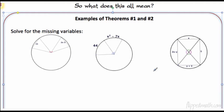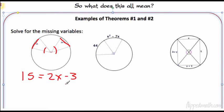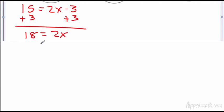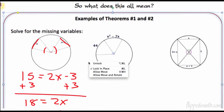What do these theorems mean for solving circle problems? In the first example, we have congruent central angles. Congruent central angles have congruent arcs, and congruent arcs have congruent chords. So 15 equals 2x minus 3. Add 3 to both sides: 18 equals 2x. Divide by 2: x equals 9.